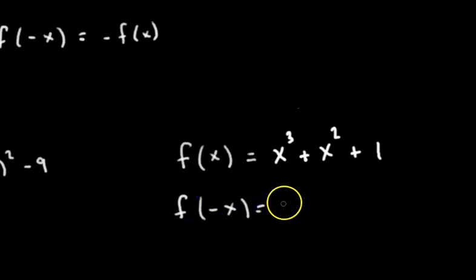So let's find what f of negative x is. In this case, we get negative x cubed. It's an odd exponent, so the negative stays there. And then plus negative x squared. It's an even exponent, so the negative goes away, so x squared. And then plus 1. So here's f of negative x and here's f of x.